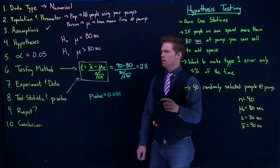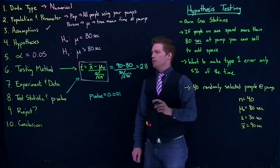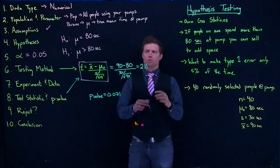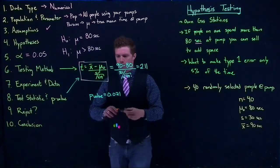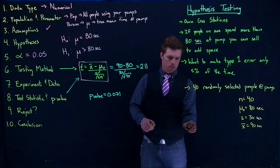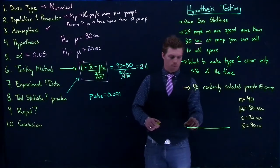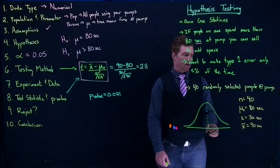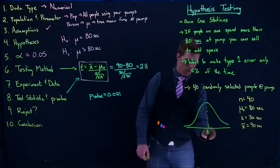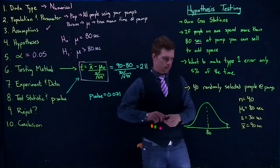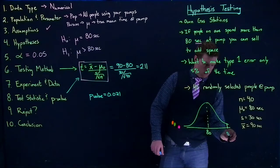I'll show how to do this in software in another example. For now, we have our p-value. It's really important to draw a picture to see what's going on. At the middle is our hypothesized mean of 80 seconds, and we've gone up 2.11 standard errors to x-bar equals 90.